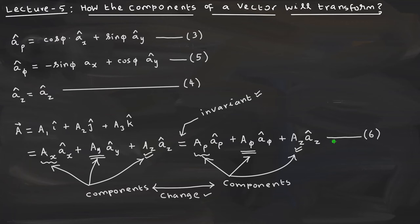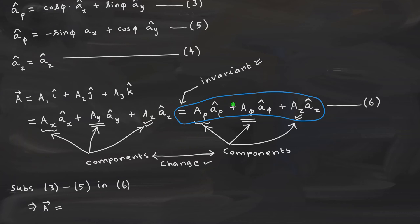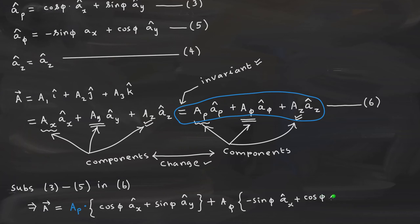We are going to use equations 3, 5, 4, and 6 all together to get the answer. Let us therefore substitute into equation number 6. Then ay, and the last one is the easiest — there is nothing to do, it is az multiplied by the az unit vector. We have now substituted equations 3, 4, and 5 into equation number 6.